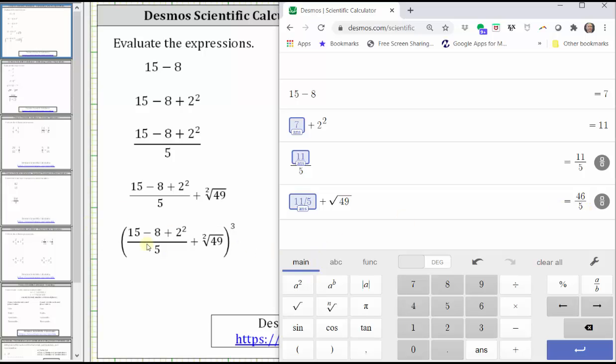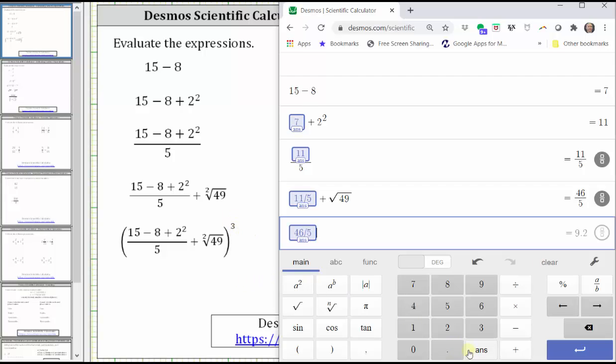And then finally notice how the fifth expression is just the fourth expression raised to the third power, which means we can click the answer key and then raise this to the third power to evaluate the fifth expression. And because it's in a box here, we don't need parentheses.